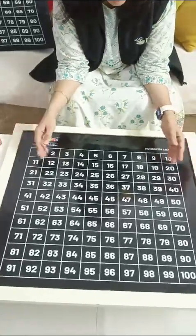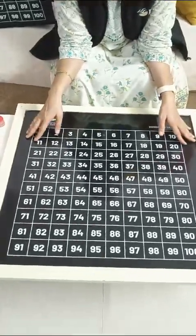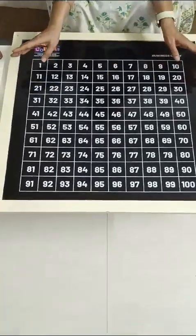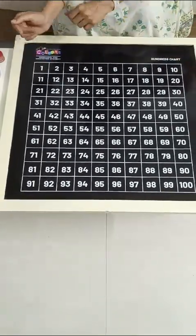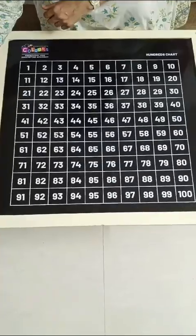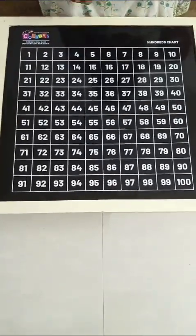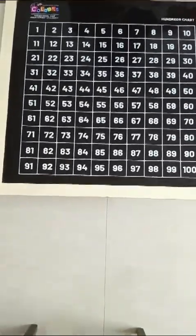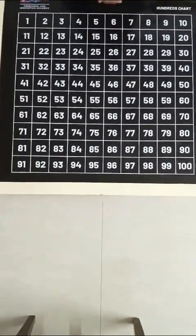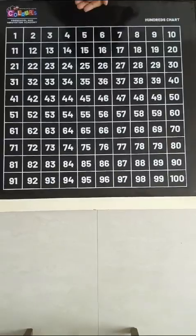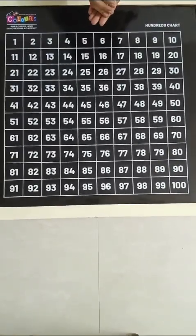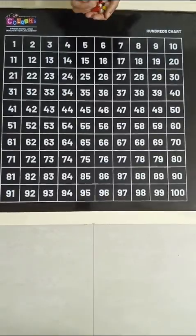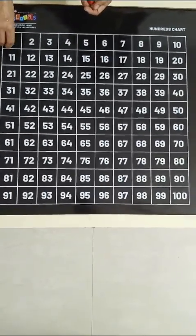Now let's see how many ways we can use the 1 to 100 chart — there are many things we can do on a hundreds chart. Let's begin with addition. For a grade one child, you can create a party scene, maybe your child's birthday, because children love their birthdays.